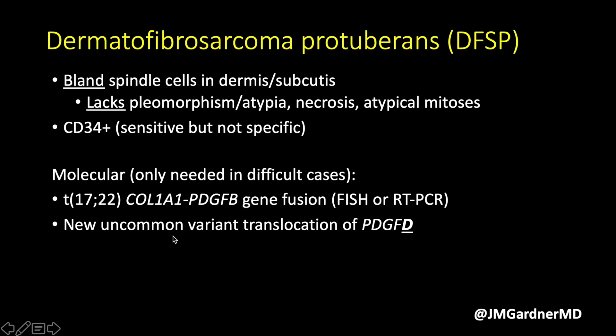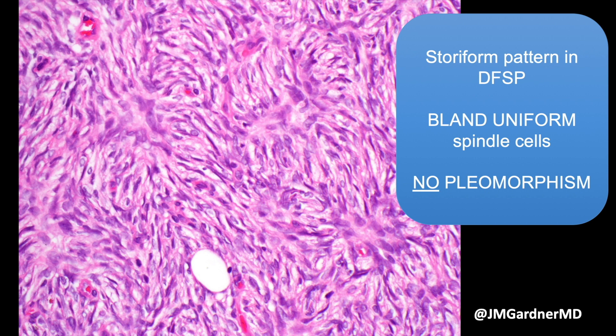The most commonly seen translocation is COL1A1-PDGFB, which can be tested by FISH or RT-PCR if needed. A newer, uncommon variant involving PDGFD and different partner genes has also been described. In non-straightforward cases I go to FISH, and if that's negative I reflex to PDGFD FISH. In straightforward cases molecular testing isn't needed, but I do perform it when I'm unsure, especially before major surgery, or when I have a bland CD34-positive spindle cell lesion I can't otherwise classify.